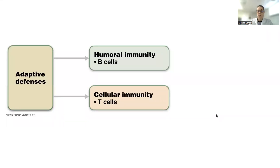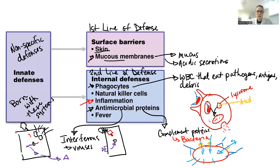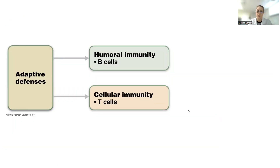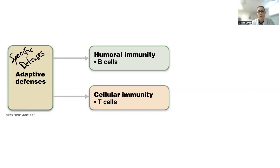So we talked about innate defenses — barriers and internal defenses that are nonspecific, meaning they don't care what tries to invade your body, they're just going to get rid of it. You have another set of defenses called the adaptive or specific defenses. These are ones you have to actually acquire — also called acquired immunity — because you have to be exposed to something in order to make this immunity happen.